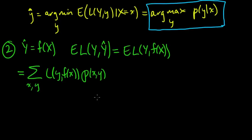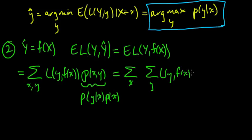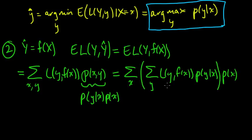Let's factor this further. We factor p(x, y) as p(y|x) times p(x). We put the sum over x on the outside and the sum over y on the inside, giving us the loss of y with f(x) times p(y|x), all weighted by p(x). I just rewrote the previous line by factoring the joint distribution. Now let's think about this inner sum.